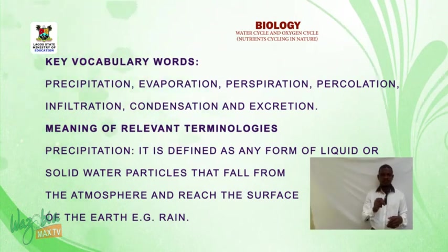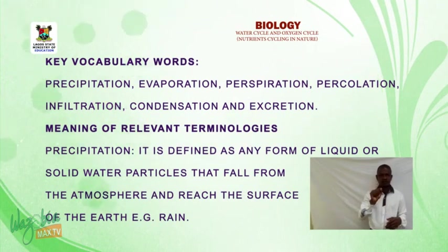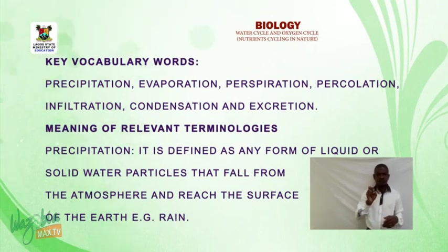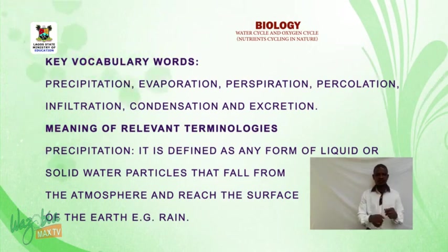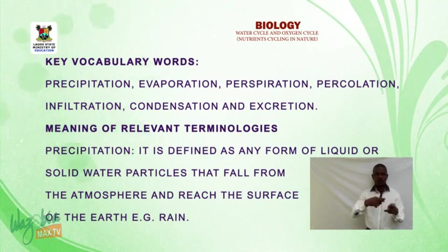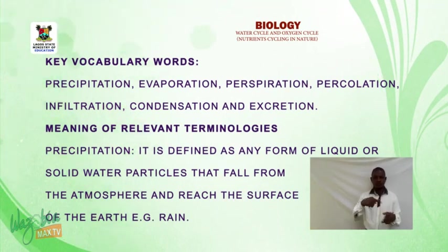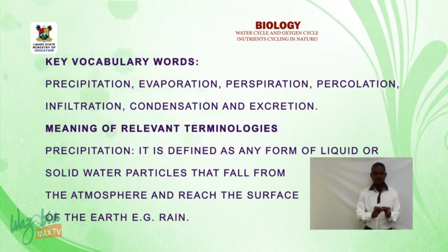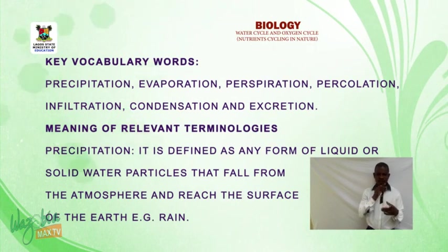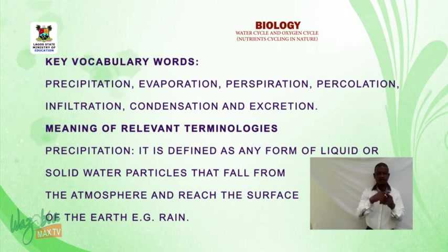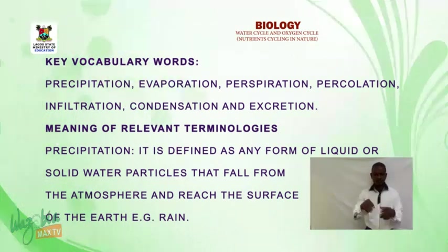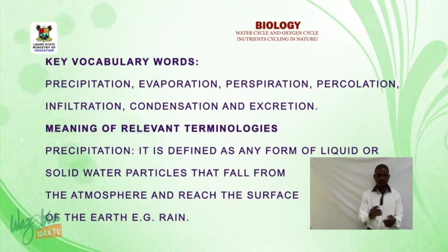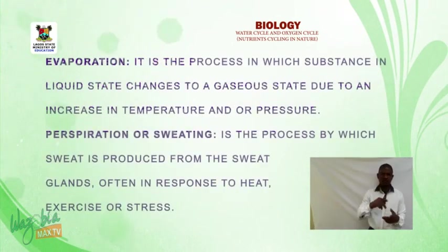Meaning of relevant terminologies. Precipitation: it is defined as any form of liquid or solid water particles that fall from the atmosphere and reach the surface of the earth. For example, rain. Evaporation is also included.